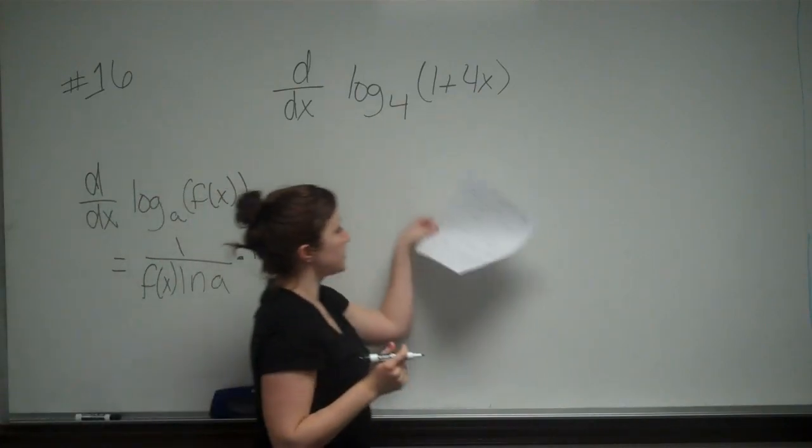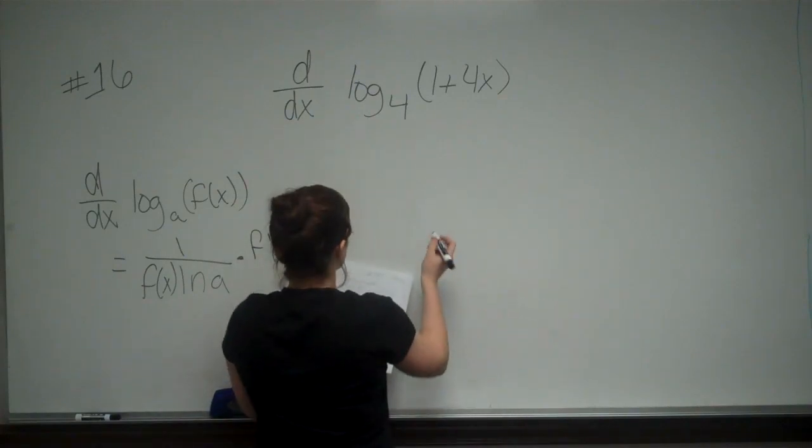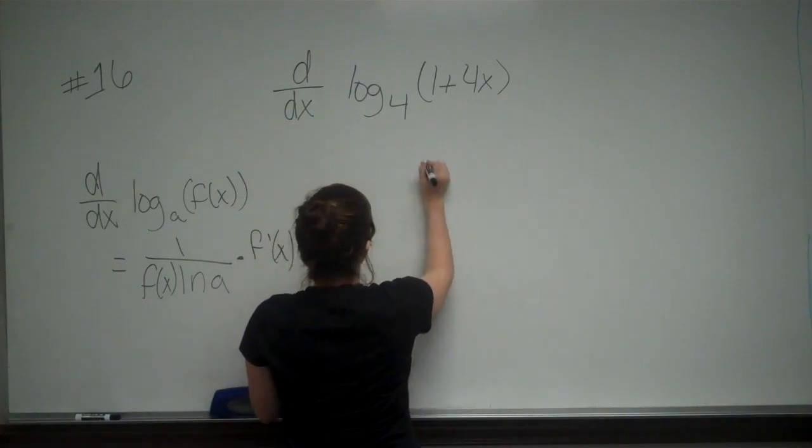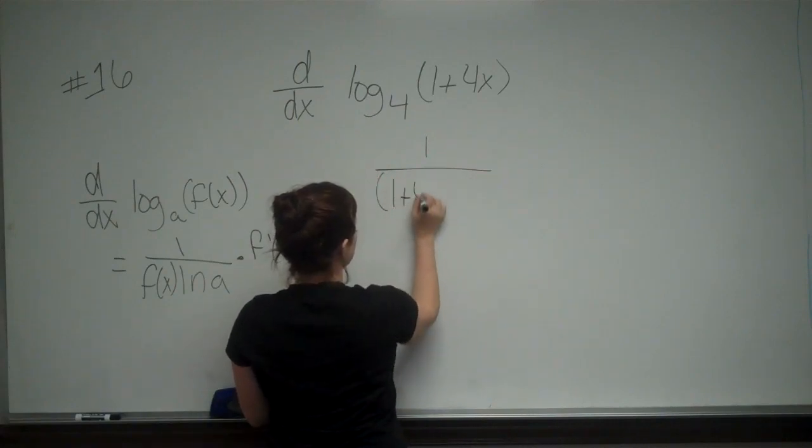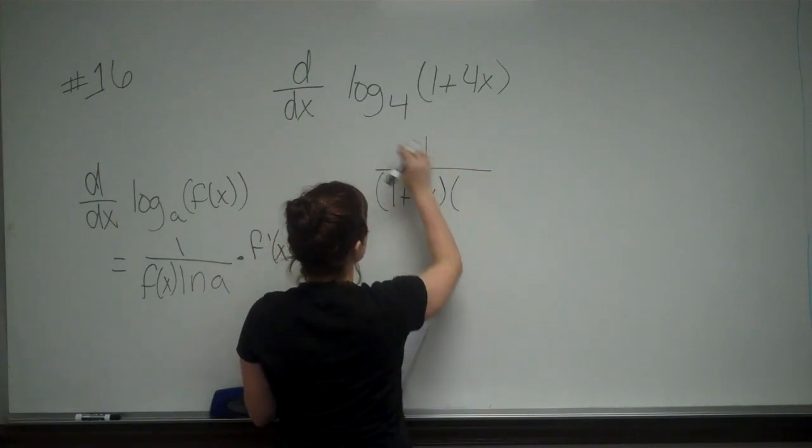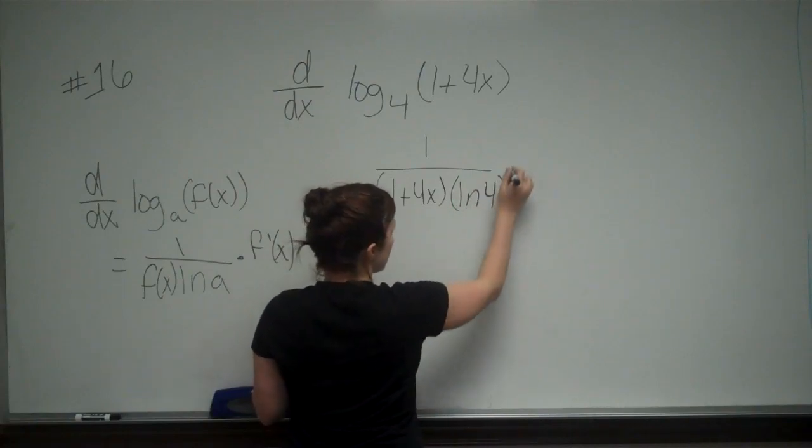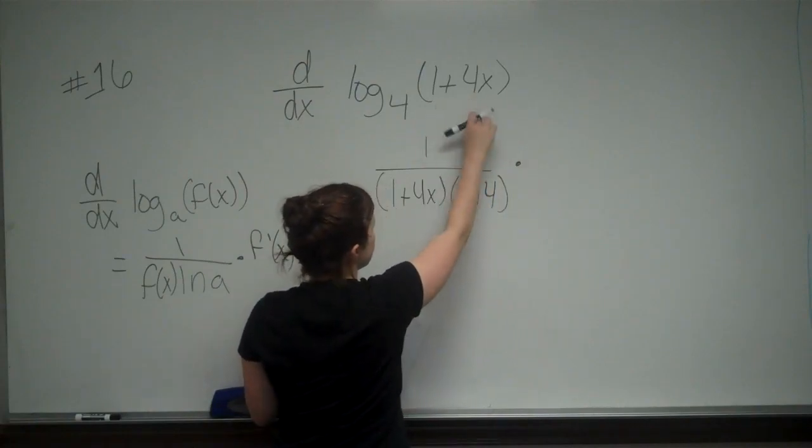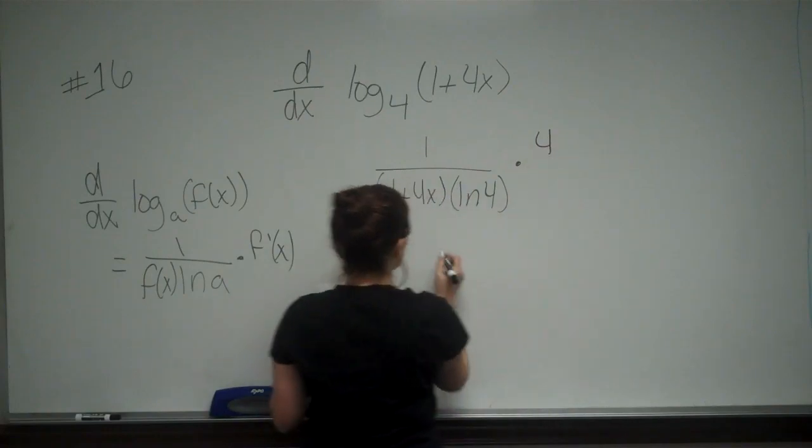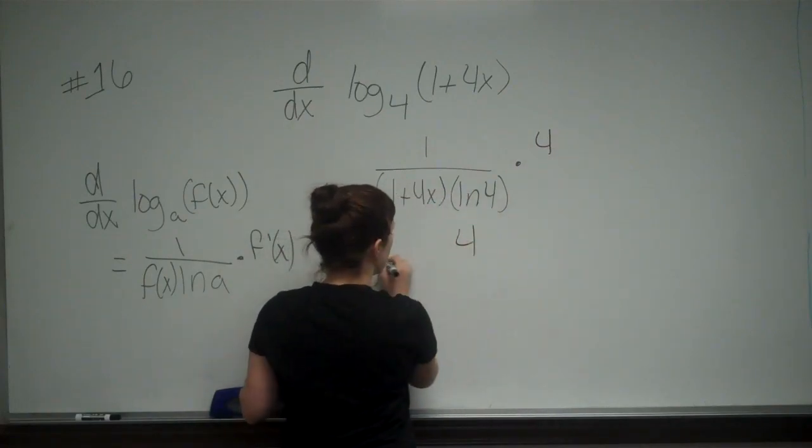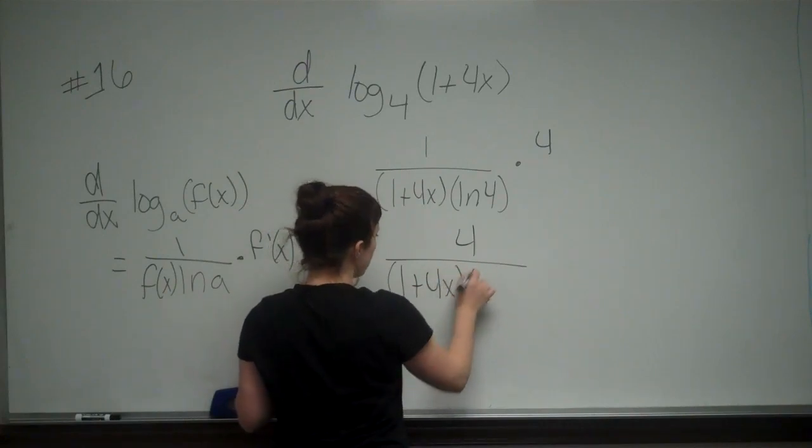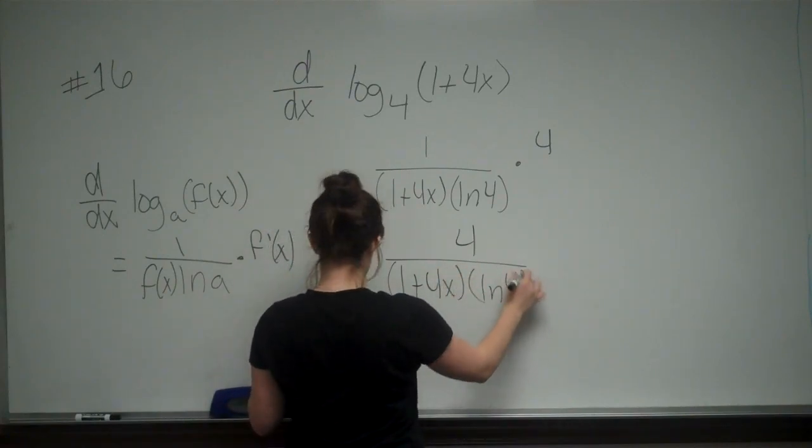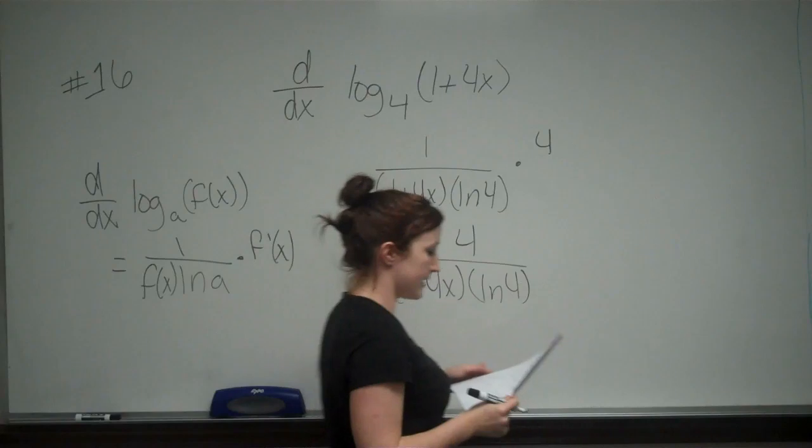So, for us, now we just need to plug and chug. That would give me 1 over 1 plus 4x times the natural log of 4, and then I need to multiply it by the derivative of the inside, which is 4. So, my answer is just 4 over 1 plus 4x ln of 4. And that is answer C.